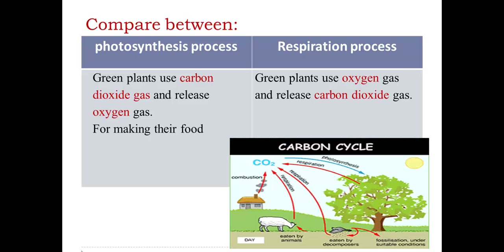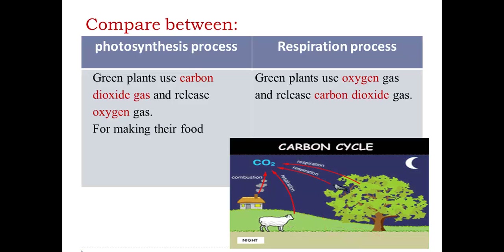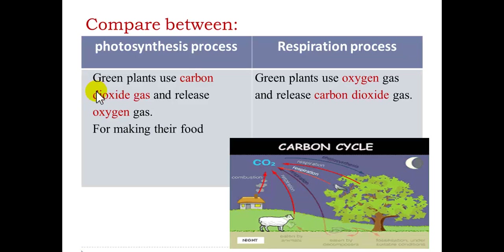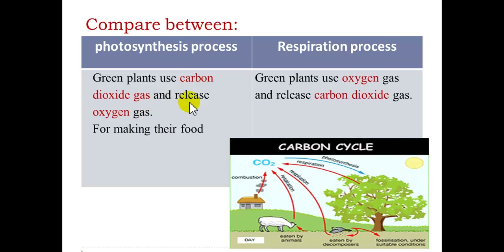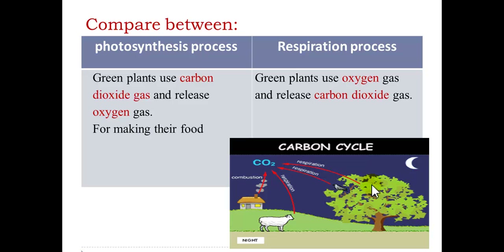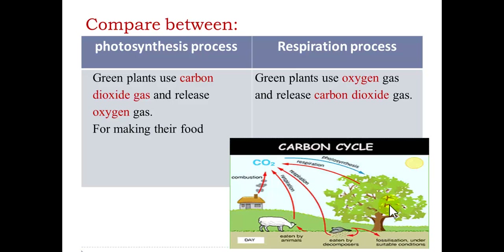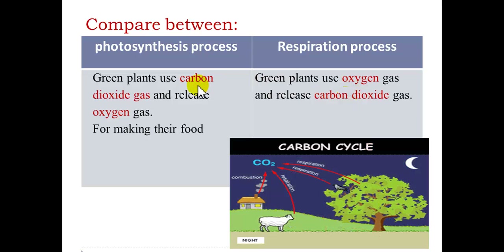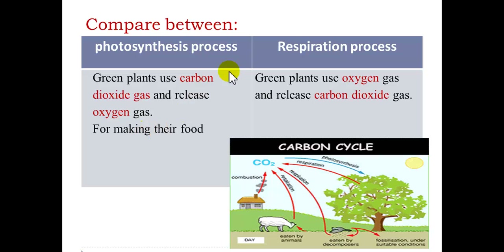Let's look at two processes that plants carry out. The first is photosynthesis, where the plant takes in carbon dioxide gas and releases oxygen gas to make its food. Photosynthesis takes place during the morning in the presence of sunlight. The second is respiration: plants, like all living organisms, need oxygen for respiration and release carbon dioxide gas.